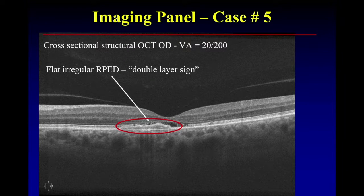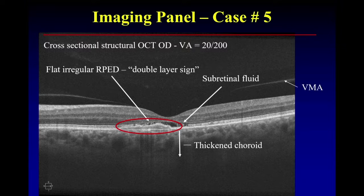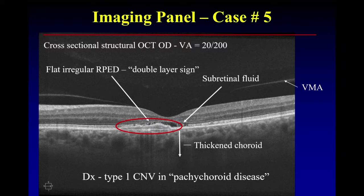A double layer sign, flat irregular RPED, subretinal fluid — some of us might think the choroid is thickened. And that's VMA, vitreomacular adhesion. Is that pathologic? I'd say that's an ancillary finding. So is this a type 1 CNV, guaranteed 100 percent? What makes me think this is related to another process other than AMD is the fact that you've got photoreceptor loss, which means there's probably been chronic fluid — not usually consistent with AMD.